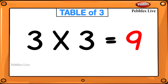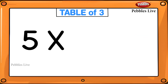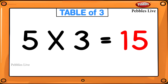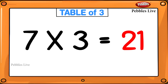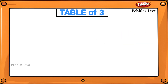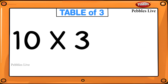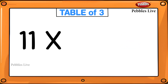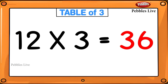6 threes are 18, 7 threes are 21, 8 threes are 24, 9 threes are 27, 10 threes are 30, 11 threes are 33, 12 threes are 36.